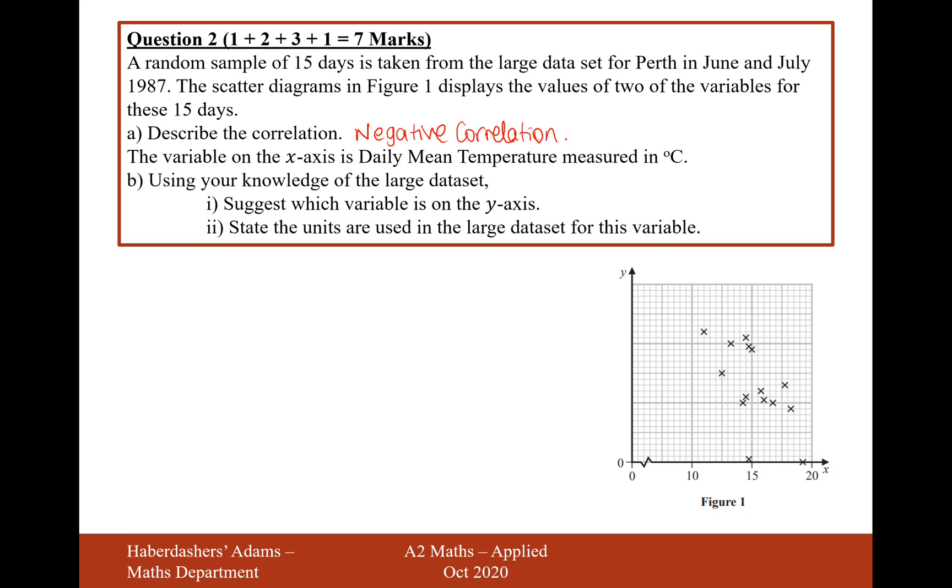The variable on the x-axis is daily mean temperature measured in degrees Celsius. Using your knowledge of the large data set, suggest which variable is on the y-axis and state the units. So what we've got here is a variable that's going to be negatively correlated with daily mean temperature, and potentially this variable could be exactly zero, and there'd be a range of different values in between. So it's unlikely to be something like cloud cover, because there's lots of different potential values of this y variable, whereas cloud cover is measured in octars, which is just eighths, so we'd only see eight potential data values there.